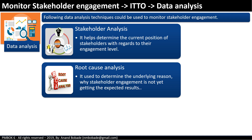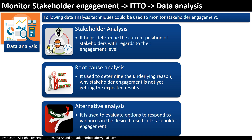Root cause analysis is a technique used to determine the underlying reason why stakeholder engagement is not getting the expected results. Once you have analyzed the root cause and come up with a few options on how to respond to the variance between the current position and the desired engagement level, alternative analysis is used to evaluate those options.